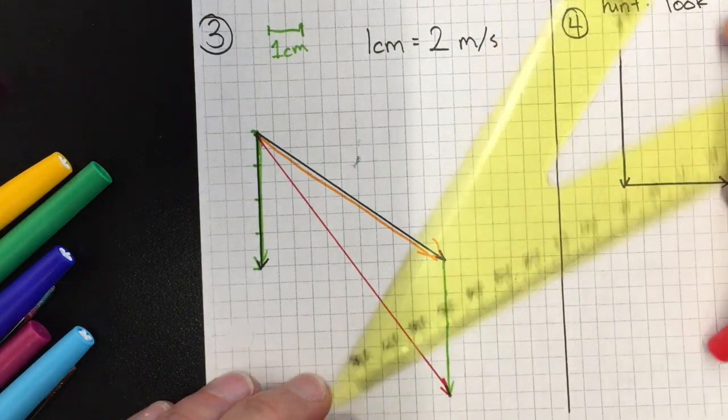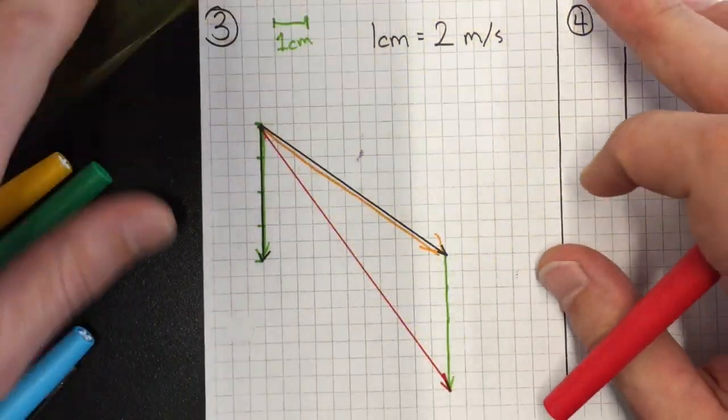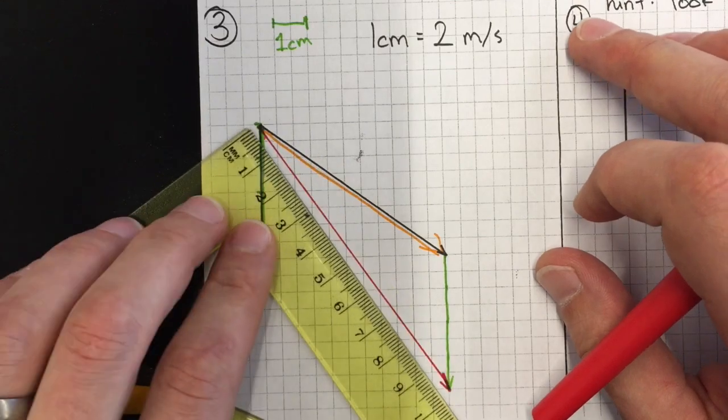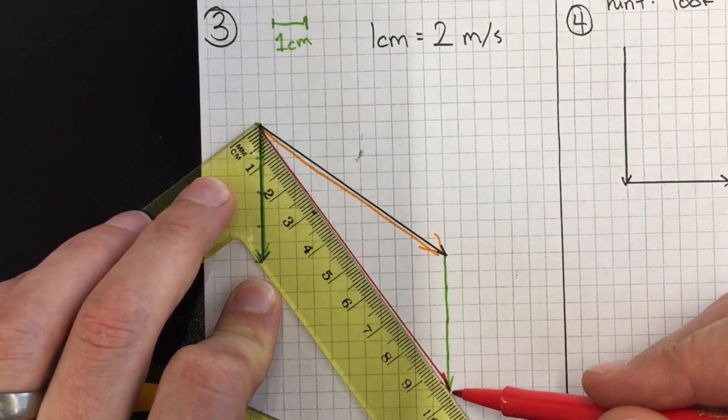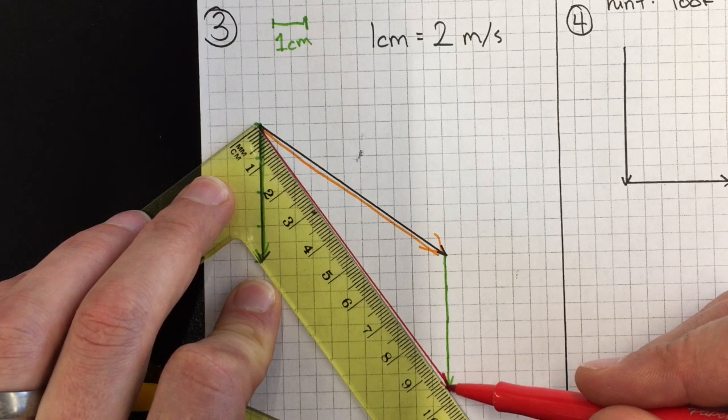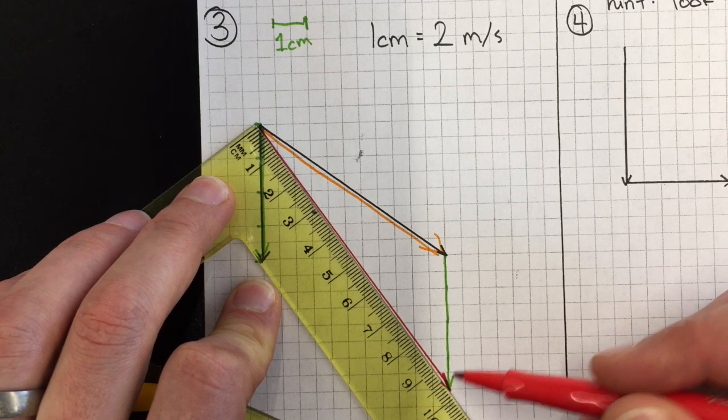Measure from tail - put zero at the tail to the tip. This looks like it's nine point five, six, seven, maybe a little tiny bit more. I'll go with nine point seven.